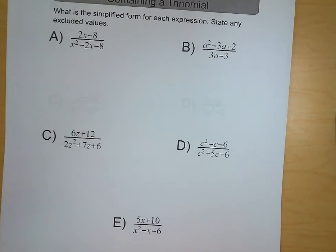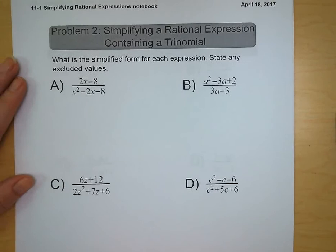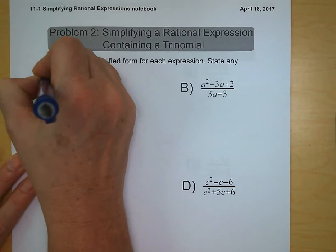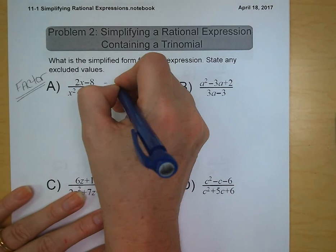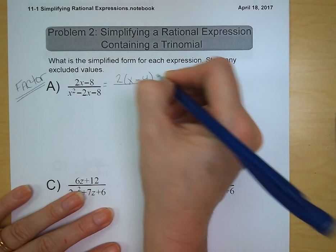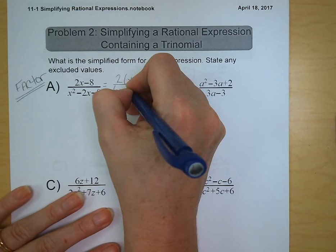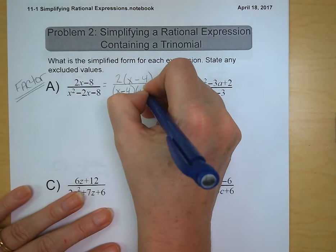Problem 2 is simplifying a rational expression that contains a trinomial. Once again, this is going to be heavily reliant on your skills from Chapter 8. We need to factor, and we should always look for common factors that we can pull out. We can bring out a 2, and we're left with x minus 4. When we factor x squared minus 2x minus 8, we get x minus 4 and x plus 2.